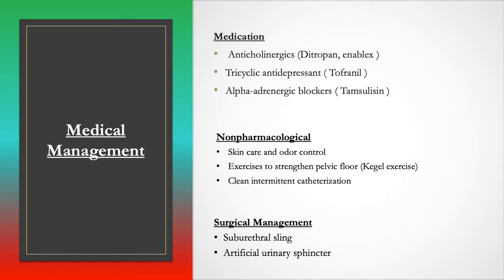Tricyclic antidepressants such as Tofranil can also be used — these medications decrease the contractility of the bladder. Alpha adrenergic blockers, which end in '-sin' such as tamsulosin and alfuzosin, are for men with BPH (benign prostatic hyperplasia), an increased size of the prostate gland. The enlarged prostate blocks urine flow, and alpha adrenergic blockers shrink the prostate to facilitate proper urinary elimination and promote urethral relaxation.